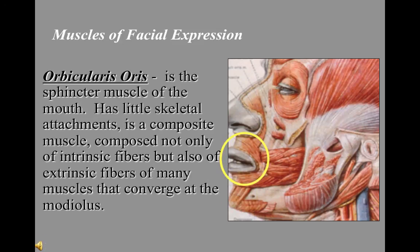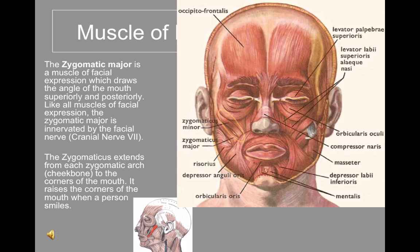Orbicularis oris is the sphincter muscle of the mouth with a slight amount of skeletal attachment. It is a composite muscle composed not only of intrinsic fibers but also extrinsic fibers of many muscles that converge at the modiolus. The zygomaticus major is a muscle of facial expression which draws the angle of the mouth superiorly and posteriorly, innervated by the facial nerve (cranial nerve VII). It extends from each zygomatic arch to the corners of the mouth, raises the corners when a person smiles, and influences the denture in that area.